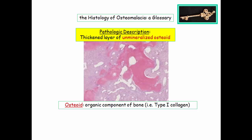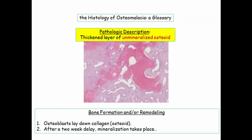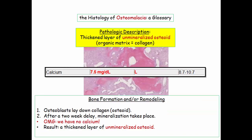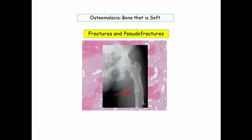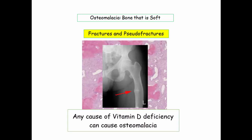The NBME doesn't come right out and say osteomalacia — you need to be familiar with the language they use. The characteristic pathologic description includes a thickened layer of unmineralized osteoid, with osteoid representing the organic component of bone, essentially type 1 collagen. When you see this description, they are telling you the patient has osteomalacia. Osteoblasts lay down collagen, and mineralization is delayed approximately two weeks to permit collagen to cross-link. If calcium is deficient, there is inadequacy of mineralization, resulting in an increased layer of osteoid never mineralized. The patient may be described with an atraumatic fracture or a pseudofracture line. Any cause of vitamin D deficiency, such as GI malabsorption, may also present with osteomalacia.